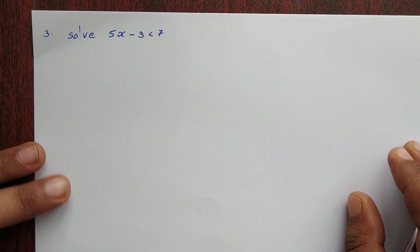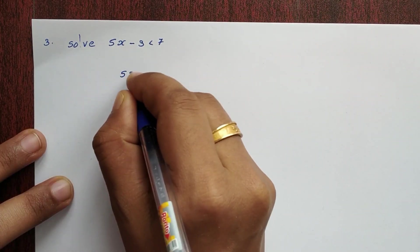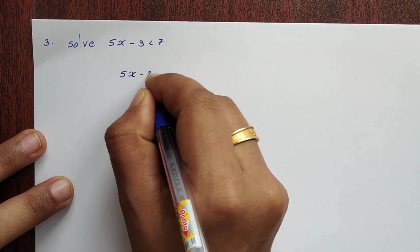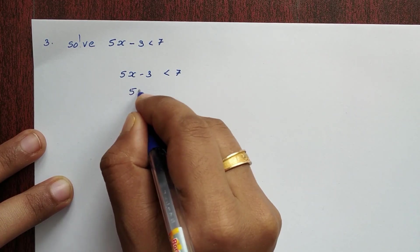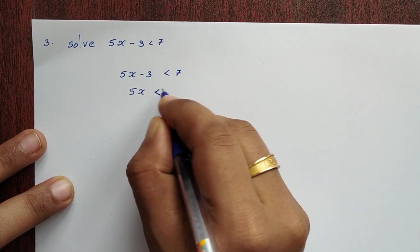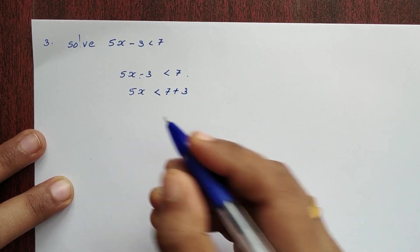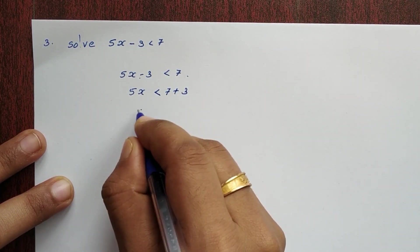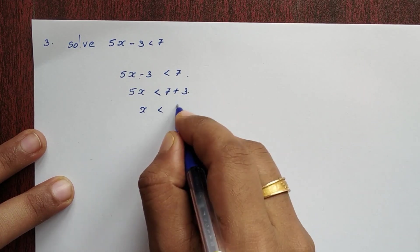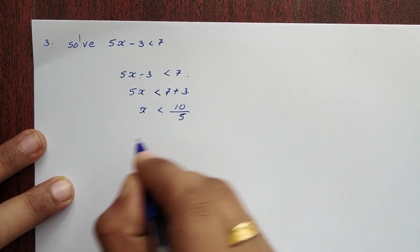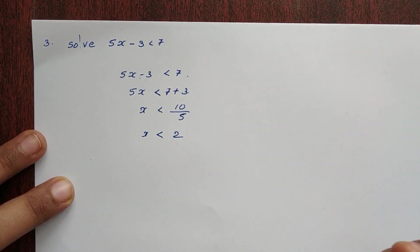Next question: 5x - 3 < 7. Solving: 5x < 7 + 3, so 5x < 10. Dividing by 5 gives x < 2.